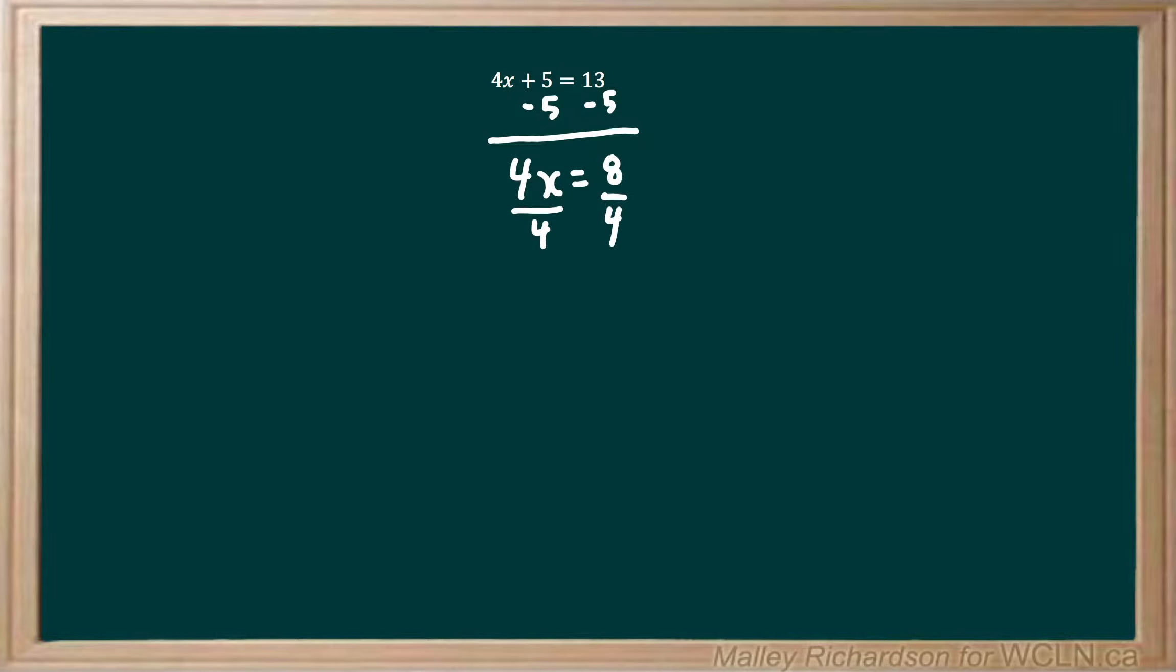We divide both sides by 4, then we draw our line and we're left with 4x divided by 4, which leaves us with x equals 8 over 4, which is 2.